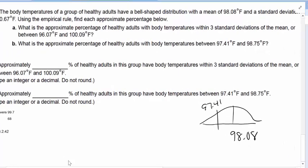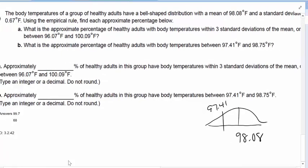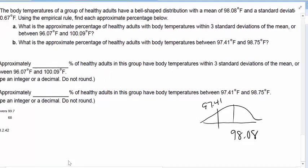Now, the body temperatures of a group of healthy adults have a bell-shaped distribution, i.e. normal, with a mean of 98.08 and a standard deviation of 0.67. Use the empirical rule to find the approximate percentage. Now is the first time we're asking what percentage. What is the approximate percentage of healthy adults with body temperatures within three standard deviations of the mean, or between 96.07 and 100.09?